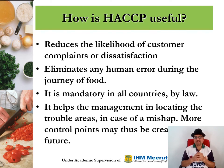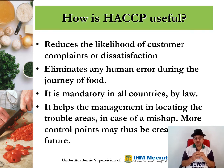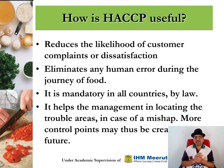Second, HACCP eliminates human error during the journey of food. Human beings make so many mistakes in life. How do we eliminate these errors? By controlling, by creating checkpoints — like speed breakers on the road. Speed breakers force you to slow down, to take a break from the high speed you were traveling at. When we create several control points, the chances of making a human error become negligible.